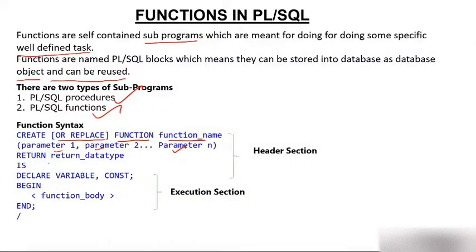A very important part is the return type, because a function always returns a value. You write RETURN followed by the data type it is returning — for example, integer, character, or whatever data type is appropriate.